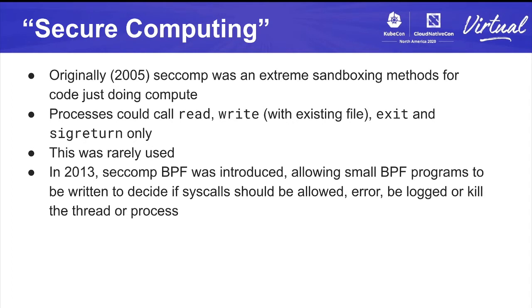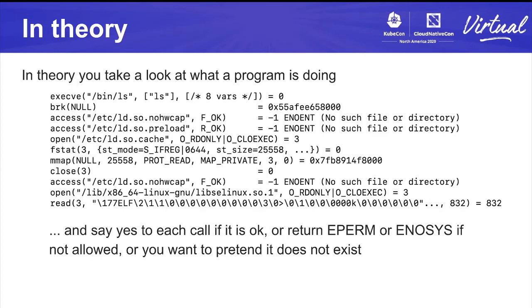So it controls what kind of interaction programs have with the outside world, which sounds really useful. In theory you can take a look at what a program is doing — system calls are shown by strace. I've shown the strace of just doing ls, and for each of these system calls you can basically say 'yeah that's fine,' 'no that's not fine, you haven't got permission to do that,' or you can pretend the system call doesn't exist at all with ENOSYS, or any other kind of operation. That's the theory.